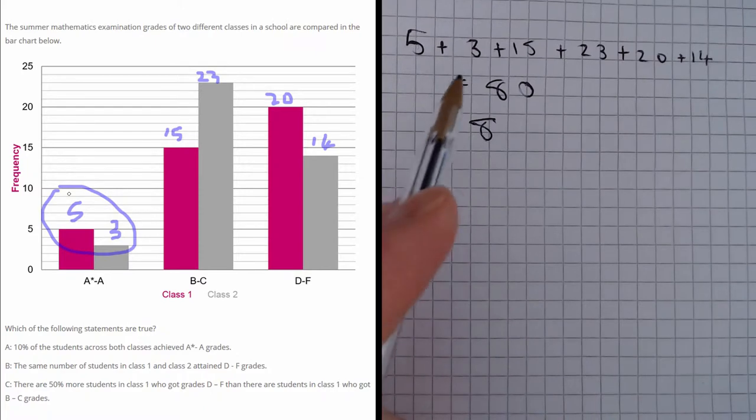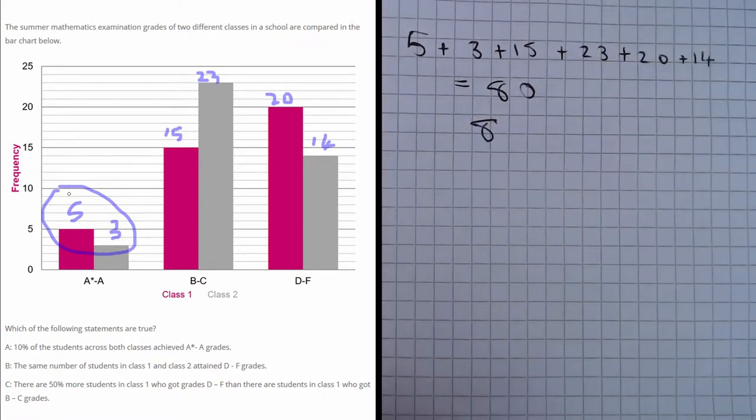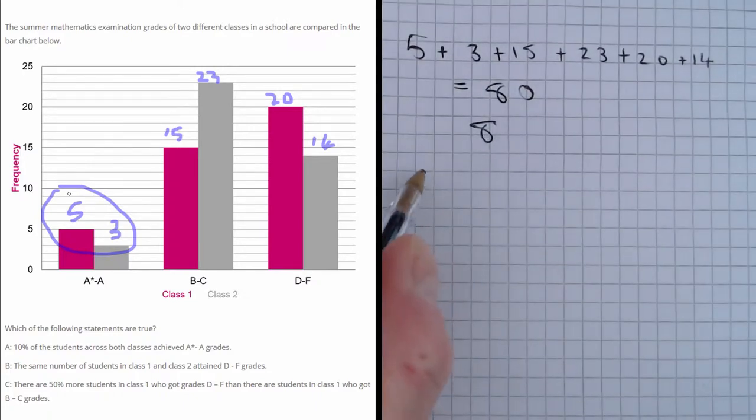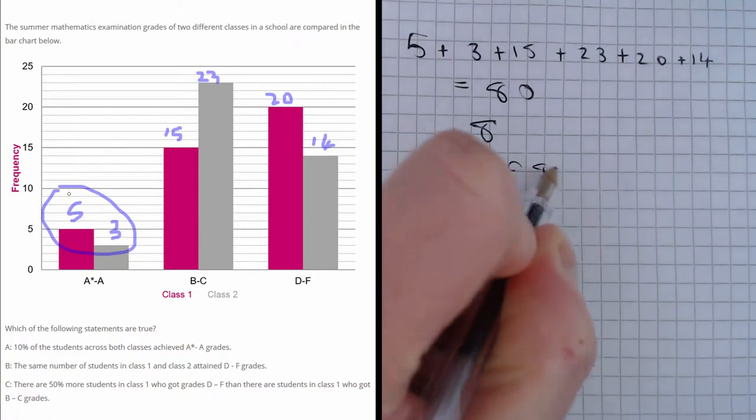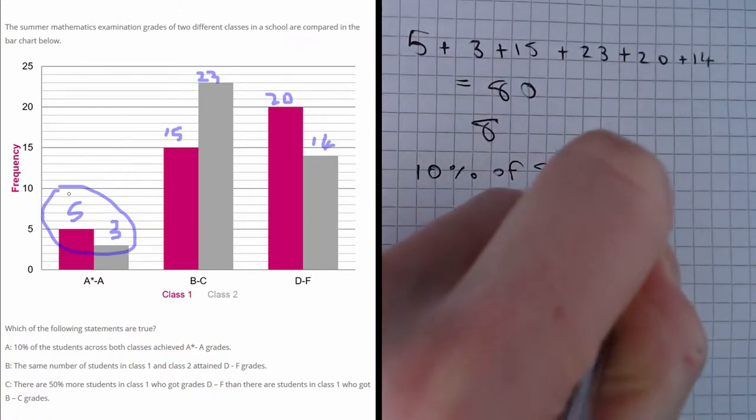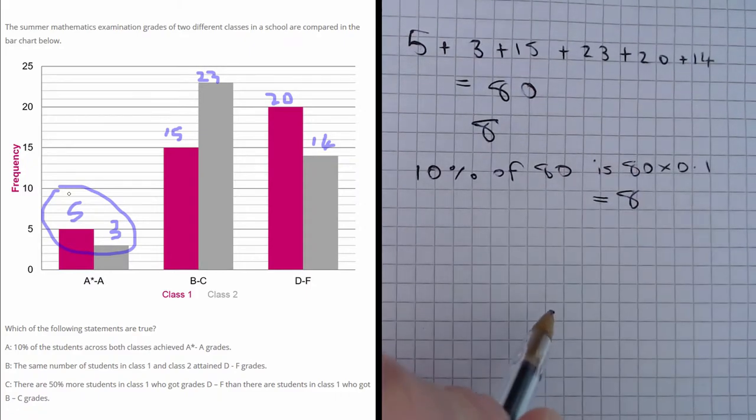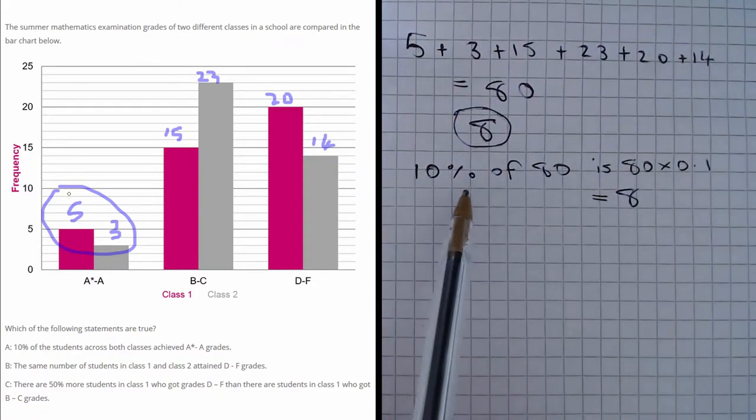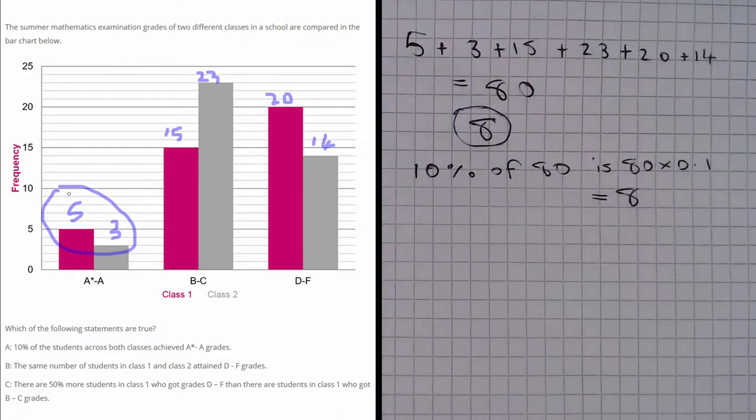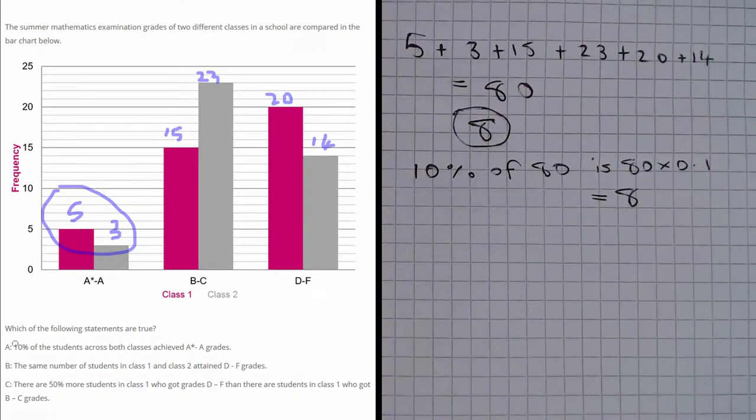So we've got 80 people in total and 8 people have A star to A grades. Now 10% of 80 is 80 multiplied by 0.1 which is 8. So we can see that this is true because 10% of 80 is 8 and we do have 8 people that have A star to A grades. So part A is true.